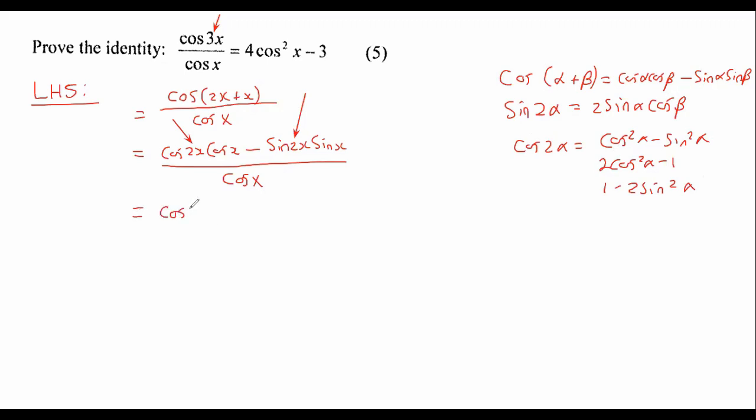So I'm going to leave it as cos 2x times cos x. Then I'm going to change the sin 2x into its expansion. Like that. And then I would just simplify a little bit.